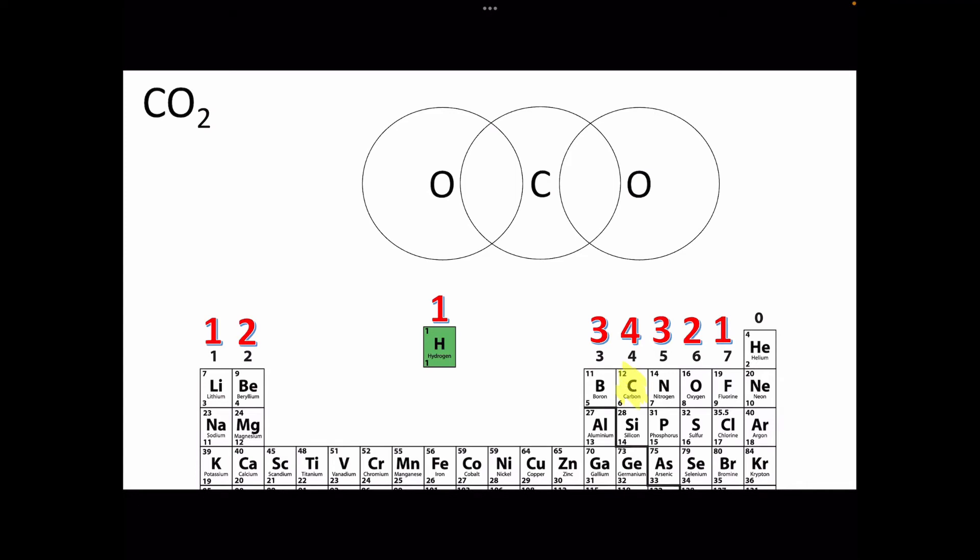You start with carbon. Carbon is in group four of the periodic table. The two numbers at the top—the first number, the group number—tells me there are going to be four electrons in the outer shell of carbon. Then the valency that I have written on tells me that all four of those electrons need to be shared. So I'll put two electrons in each of the shared areas and split them between them.